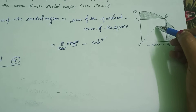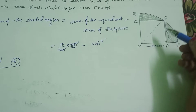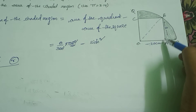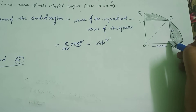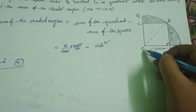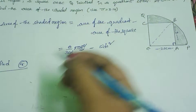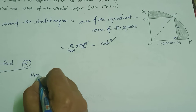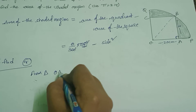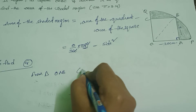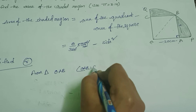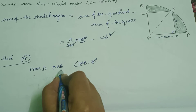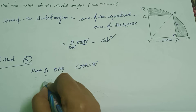So let's join OB. We can see that OAB is a right-angle triangle with the right angle at angle OAB. From triangle OAB, angle OAB equals 90 degrees, so triangle OAB is a right-angle triangle.